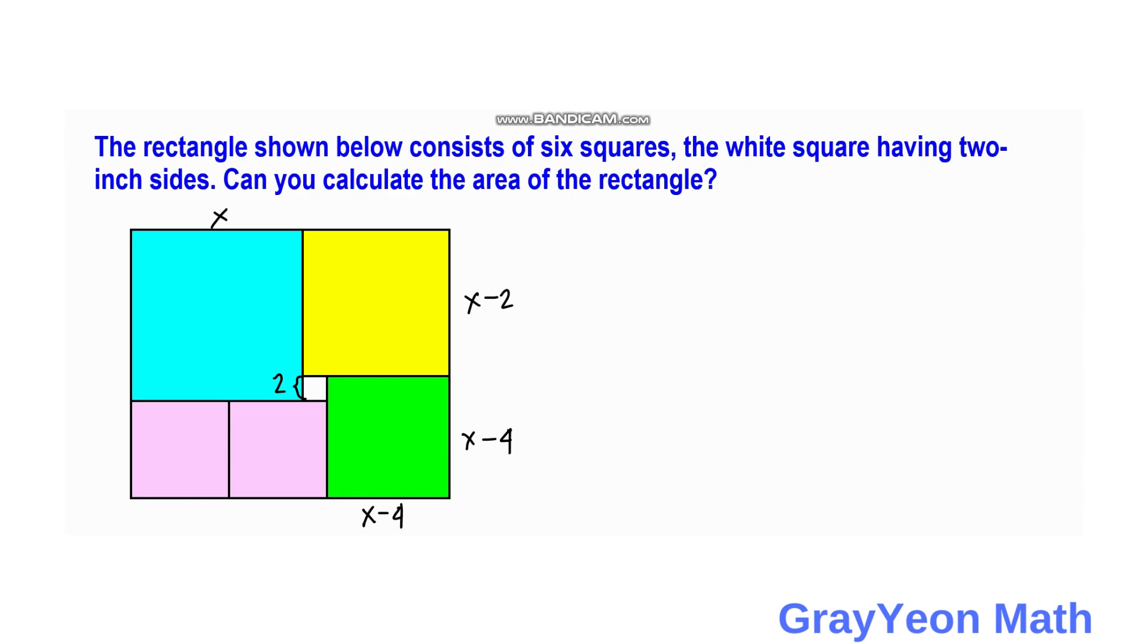we have to subtract further two, so that would be x minus four minus two, that would be x minus six. And this is also a lavender square having the same dimension x minus six. And this would be x minus six, and this is x. And for this dimension, the yellow, we have here x minus two.